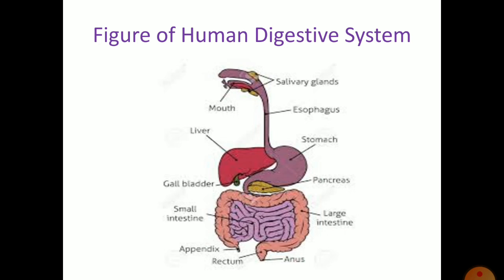This complete path covered by the food in our body from mouth to anus is known as the alimentary canal or digestive tract. As you can see in the diagram, there are three glands associated with the human digestive system. First are the salivary glands, situated in the mouth, which secrete saliva. Second is the reddish-brown liver, and beneath the liver you can see a small pear-shaped organ known as the gallbladder. Third is the pancreas.